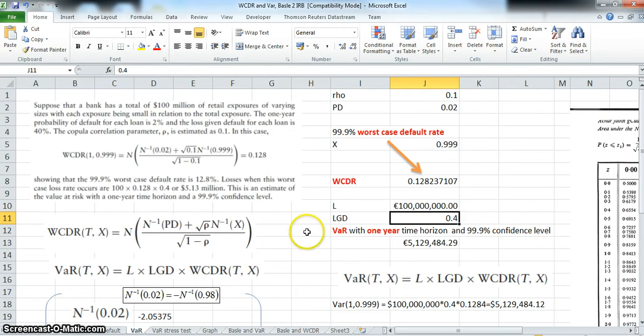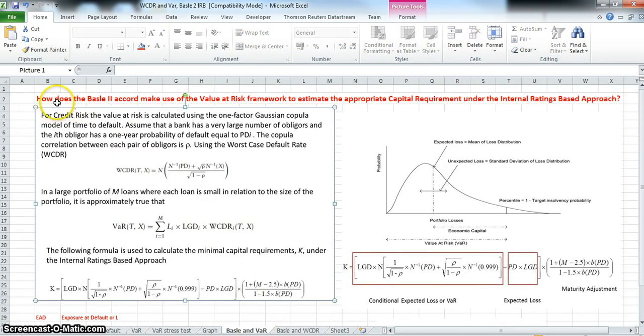A related issue here is how does the Basel II framework regulatory framework use the Value at Risk to estimate regulatory capital? Under Basel II, there's a provision for an internal ratings-based approach where the Basel Accord specifies how much capital must be set aside in order to have sufficient reserves to absorb potential losses from the loan book. How does the Basel II Accord make use of the Value at Risk framework to estimate appropriate capital requirements on the internal ratings-based approach? There's both a foundation approach and an advanced approach.